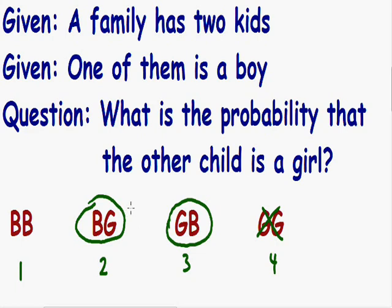What is the probability that the other child is a girl? Two out of three possible combinations. So this is our answer: 2/3.